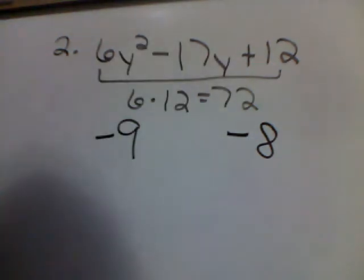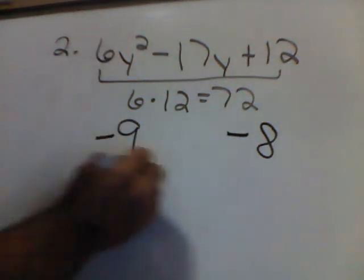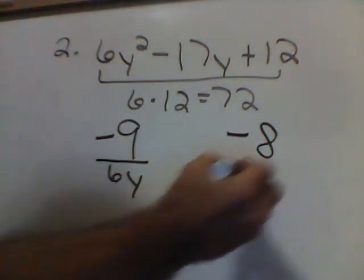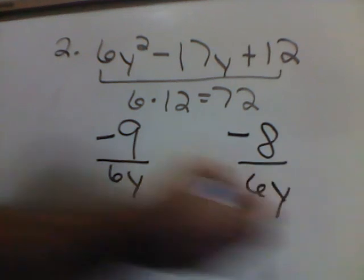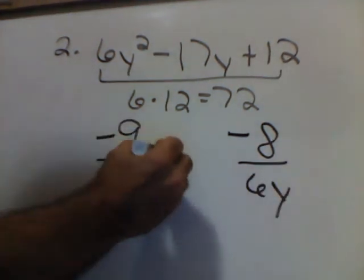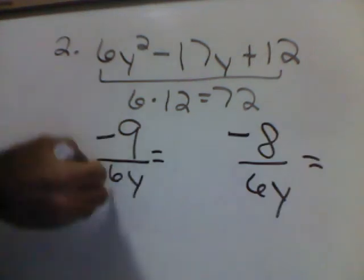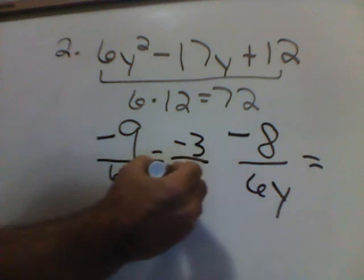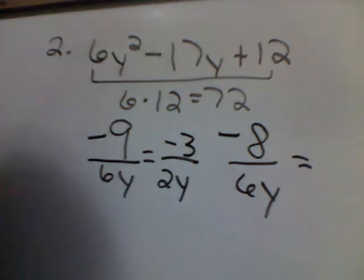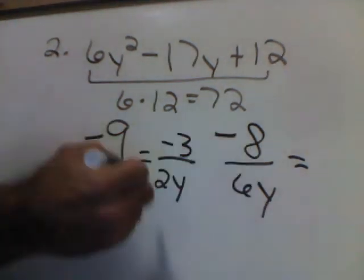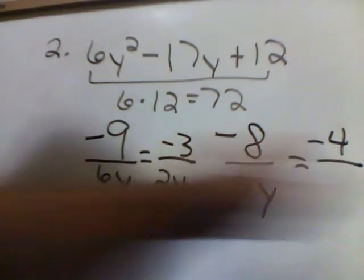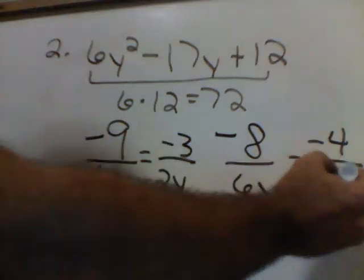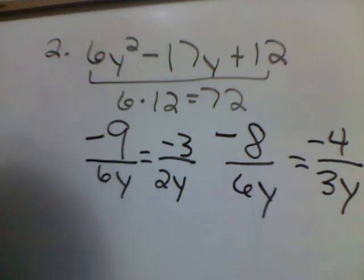Negative 9 and negative 8 still add up and give me negative 17. Now, we're going to divide both of these by the first number again and the variable. Notice, both fractions will reduce. Over here, both of these numbers have a 3, so I'm dividing the 3 out, giving me a negative 3 over 2y. On my next side, both of them have a 2, so I'm going to take the 2 out, giving me a negative 4 over 3y.